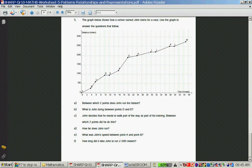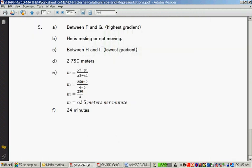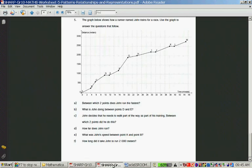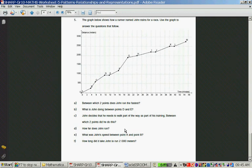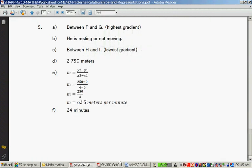And then what is his speed between A and B? This is probably the best way to calculate whether he was going slowest to work out the speed of each pass. So that's 250 in 4 minutes. 250 meters in 4 minutes time. 250 divided by 4 is 62.5 meters per minute. How long did John take to run 2,000 meters? There it is 2,000 meters. And it is 24 minutes. And this is the end of the worksheet.